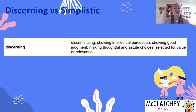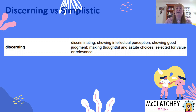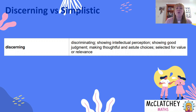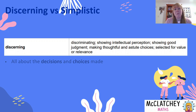First, we need to understand what discerning means. Here's the definition straight from the QCAA syllabus: it means discriminating, showing intellectual perception, good judgment, making thoughtful and astute choices, and selecting for value or relevance. Really, it's all about the kinds of choices and decisions you're making in your assignment.